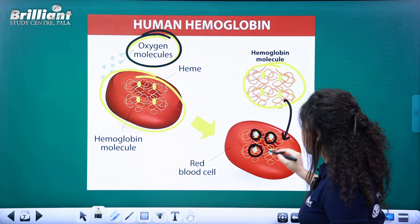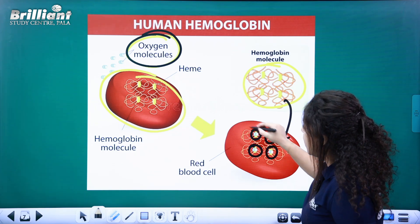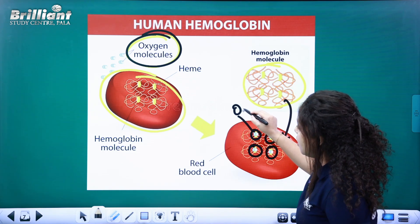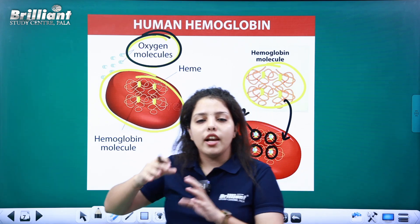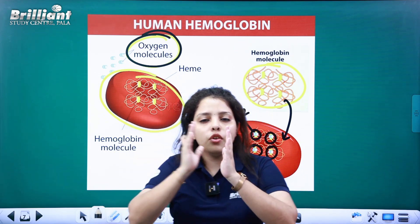Four oxygen molecules are possible. Oxygen molecules are used to bind each hemoglobin molecule in a form of four.